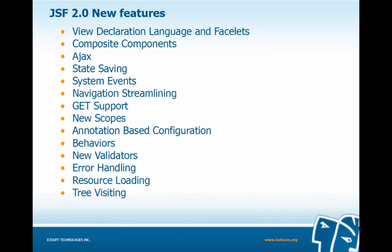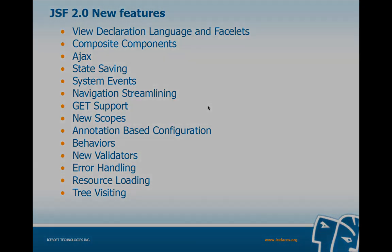There are a large number of new features in JSF 2.0. For example, the simplification of the composite component creation process has been much improved. JSF 2.0 also provides native Ajax support and has introduced partial state saving. In terms of navigation, we can now do implicit or conditional navigation. For scopes, there are three new scopes: View, Flash, and Custom. Finally, the addition of annotations reduces the size and complexity of our faces-config file. That concludes our introduction to JSF.